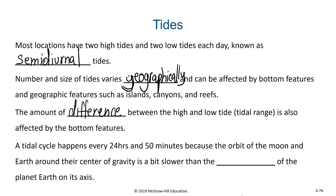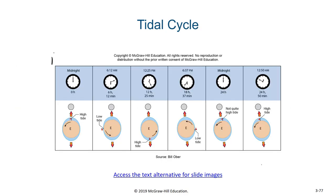An important thing to realize is that the tidal cycle happens every 24 hours and 50 minutes, because the orbit of the moon and the earth around their center of gravity is a bit slower than that of the rotation of the planet earth on its axis. So at 24 hours a given point hasn't quite reached back to its high tide yet due to the movement of the moon; instead it takes 24 hours and 50 minutes.